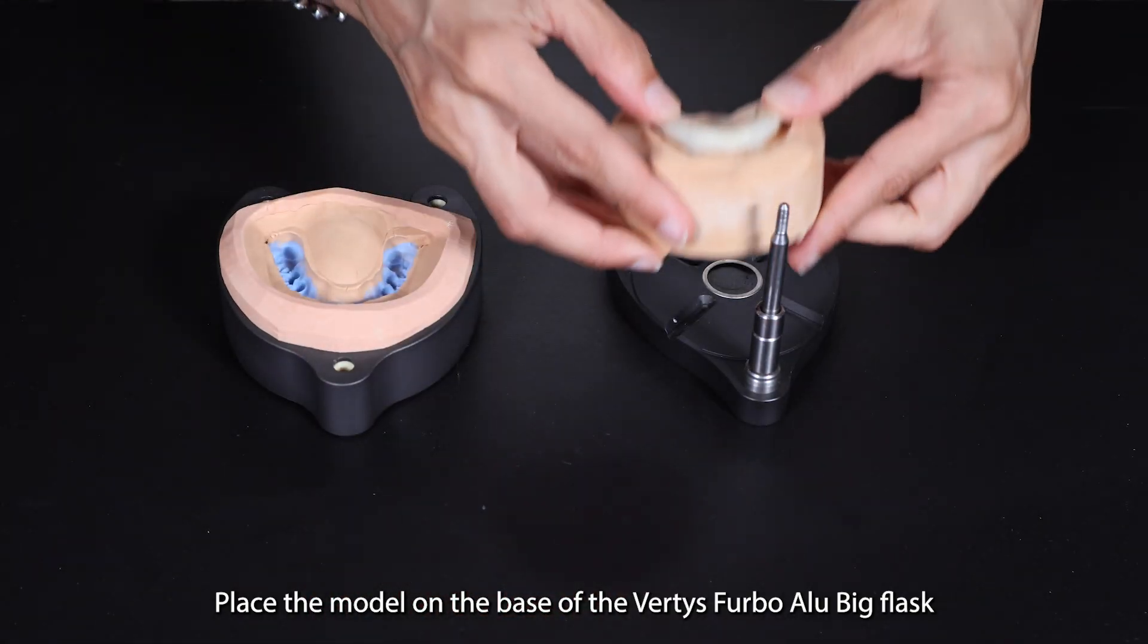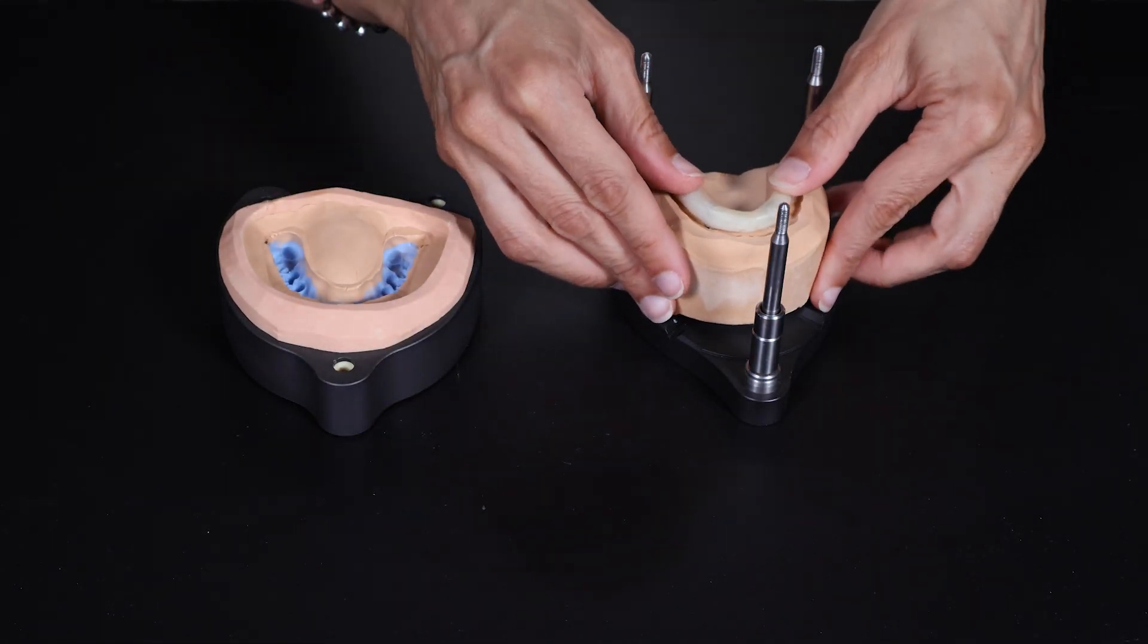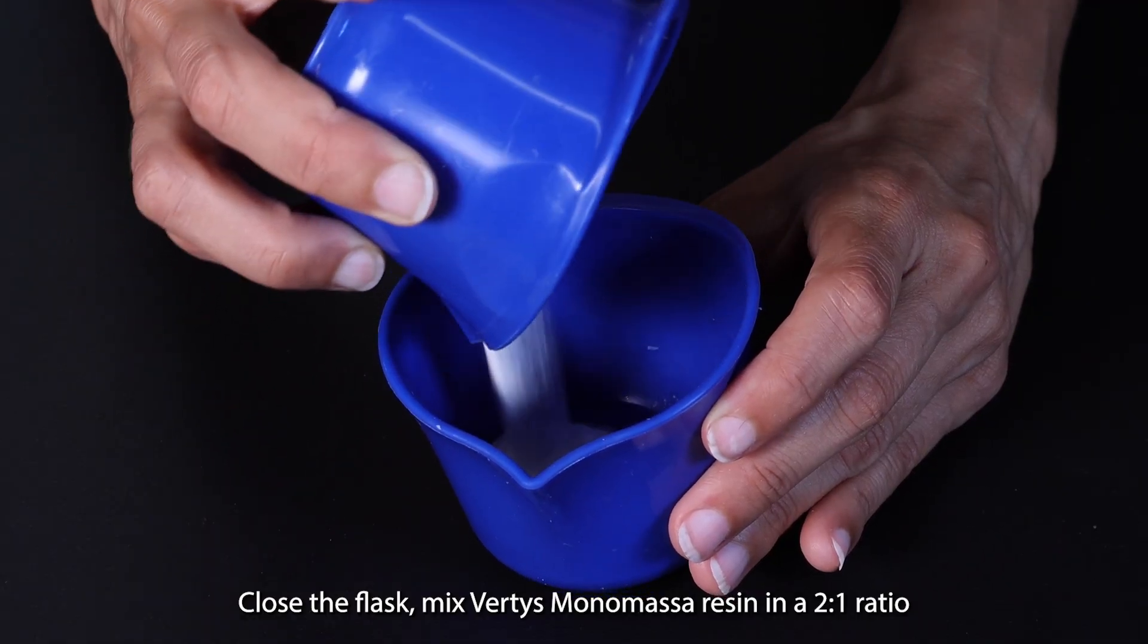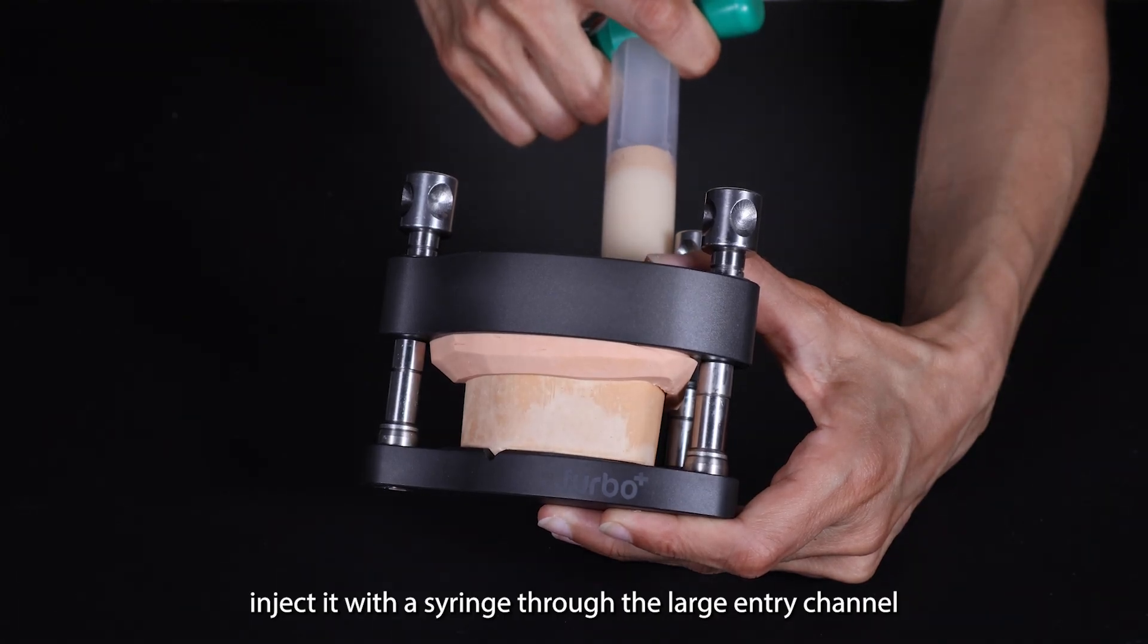Place the model on the base of the Vertis Firbo Alu Big Flask. Close the flask, mix Vertis Monomassor resin in a 2:1 ratio, and inject it with a syringe through the large entry channel.